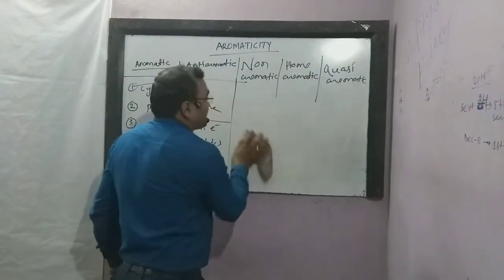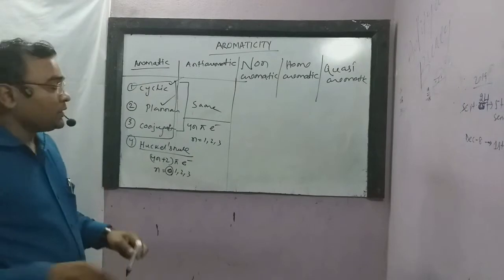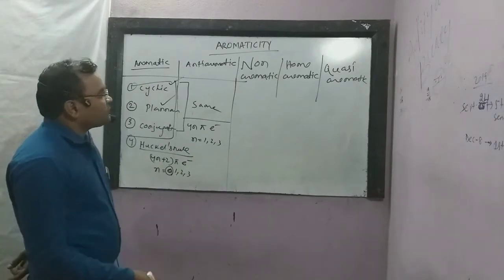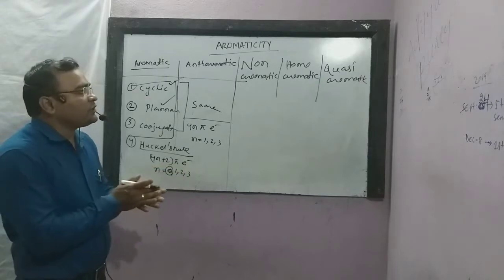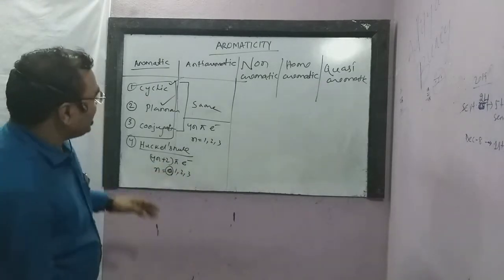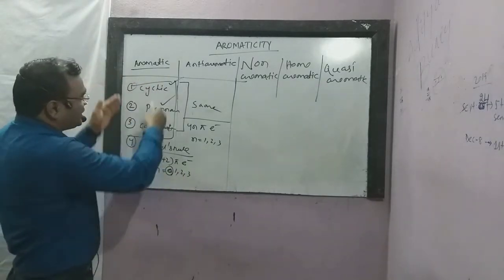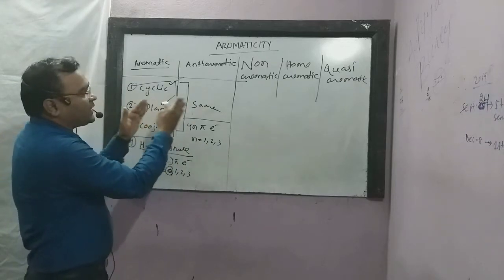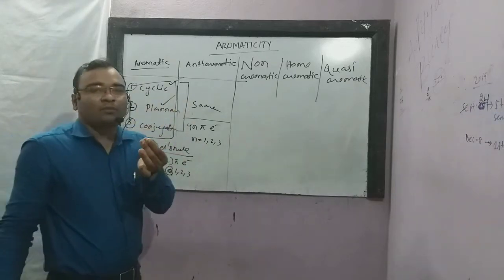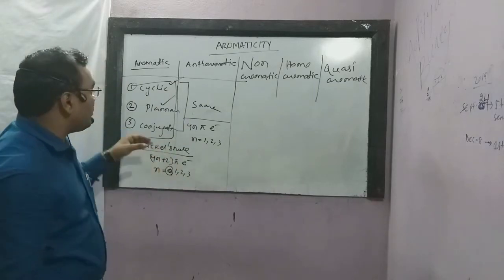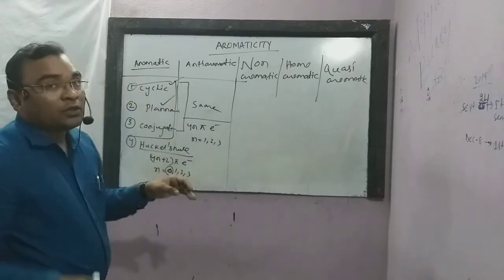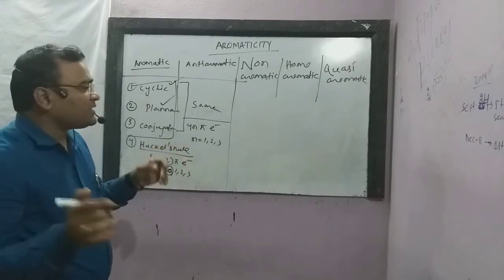Now, non-aromatic compounds. It's important to understand that between the four conditions of aromatic and anti-aromatic, if any one of the rules is not followed by any organic compound, it's called non-aromatic compound. If there is no rule violated, it's non-aromatic compound.